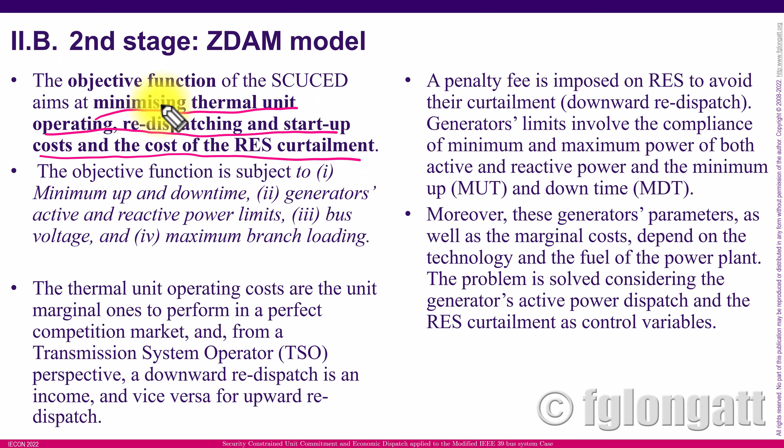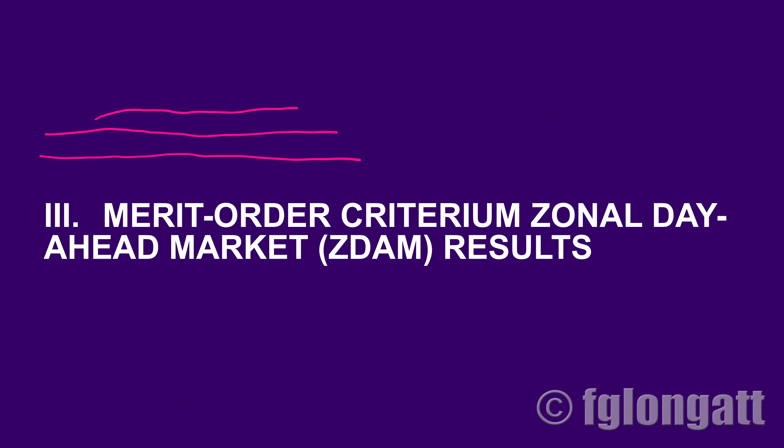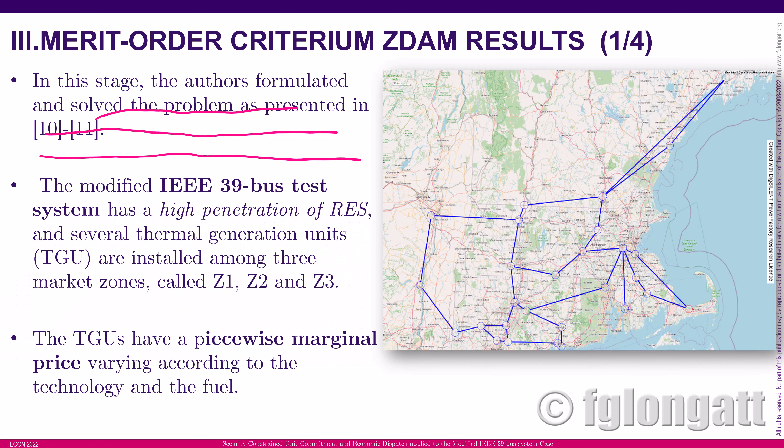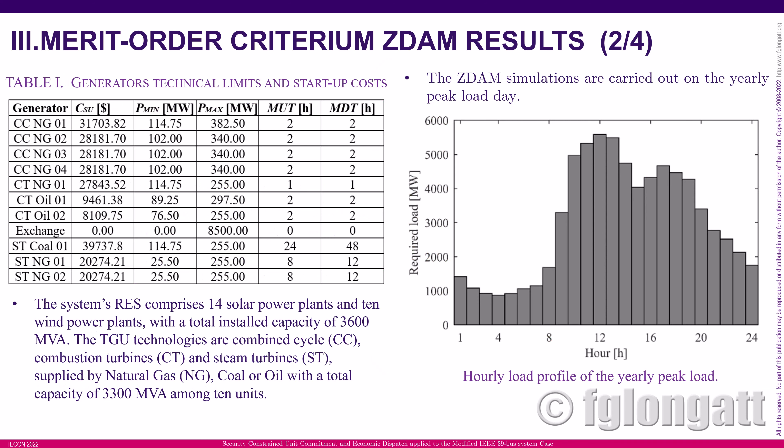Simulation results will now be presented for both stages. For the merit order based zonal day-ahead market, we use the modified IEEE 39-bus system introduced in a previous paper. This system has a high penetration of renewables but also includes thermal generation. The IEEE 39-bus system has been divided into three different zones, and the thermal generation units have piecewise marginal pricing.